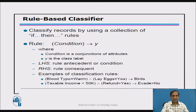Rule-based classifiers work by using a collection of if-then rules. A rule may have a condition on the left-hand side and an output generated on the right-hand side, which is a class label. The left-hand side is called the antecedent and the right-hand side is called the consequent.